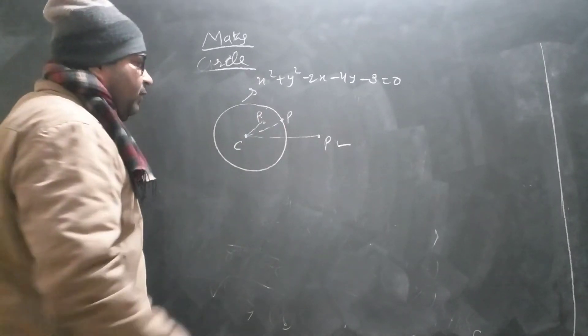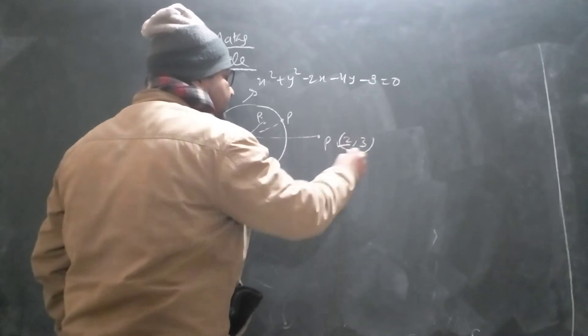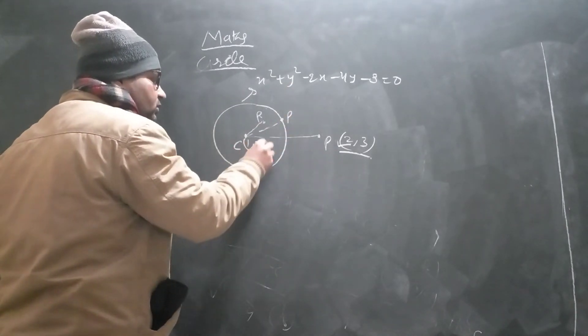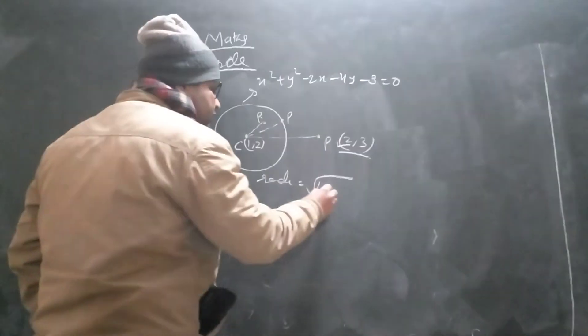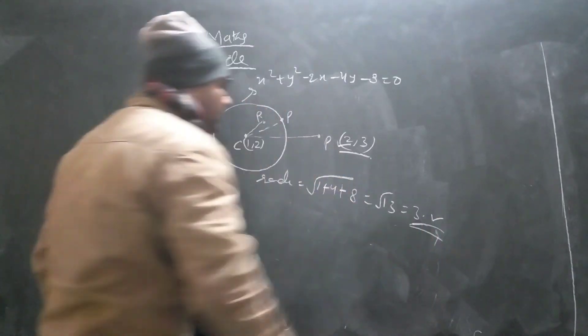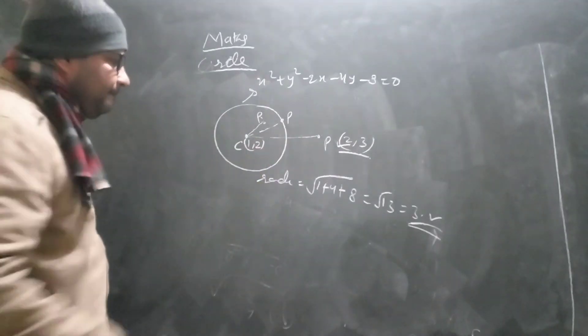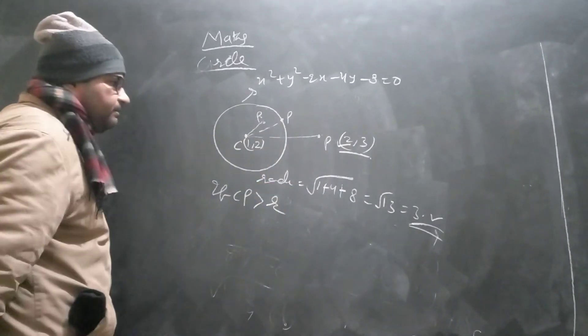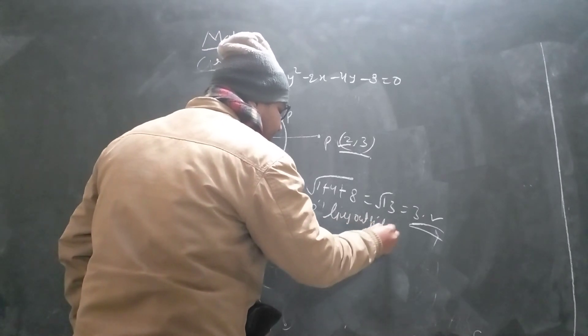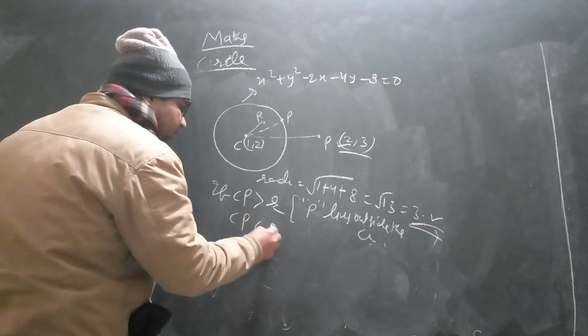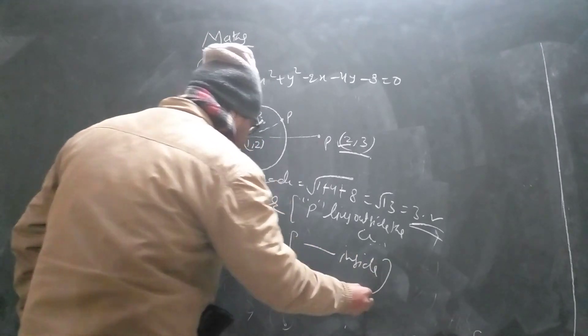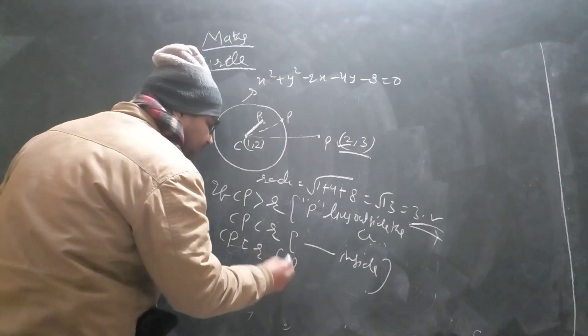So as you can see from the diagram, suppose any point, let the point be 2,3. So in order to decide if 2,3 lies outside this circle. First the circle has center 1,2 and the radius of the circle is root 30, which is approximately 5.5. Now we will find the distance CP. If CP distance is more than radius, then clearly from the diagram, point P lies outside the circle. If CP distance is less than radius, then P lies inside the circle. And if CP is equal to R, then point P lies on the circle.